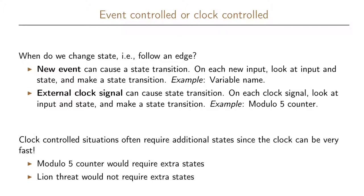The other variant is that our circuit is controlled by an external clock signal, and this clock signal will cause the state transition. Each time we have a new clock signal, we look at the input and the state and then make a state transition. Examples of this were the modulo 5 counter and the lion thread that we looked at.